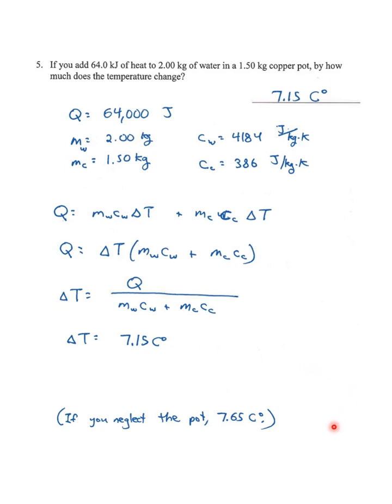Delta T is Q over (mc for the water plus mc for the copper). You plug those values in and get 7.15 Celsius degrees. By the way, if you neglected the pot, it doesn't change by that much—actually 7.65 Celsius degrees. If you only think about the water and forget about the pot itself, the water is going to absorb all the heat, but it doesn't go up by that much, 7.65 Celsius degrees.